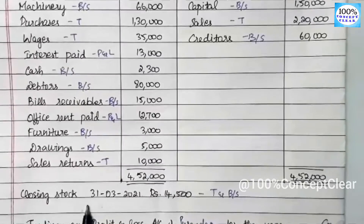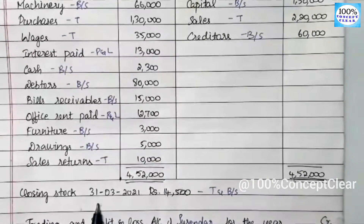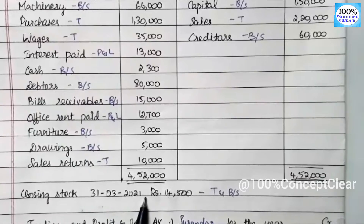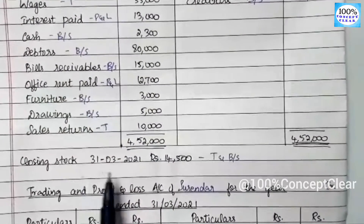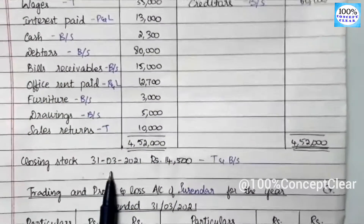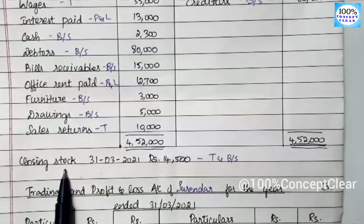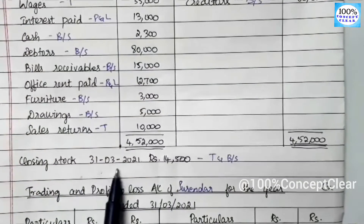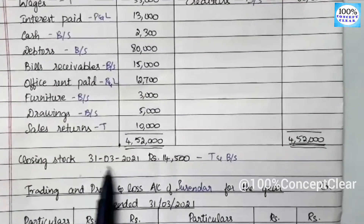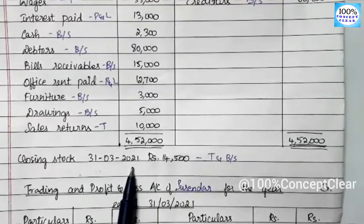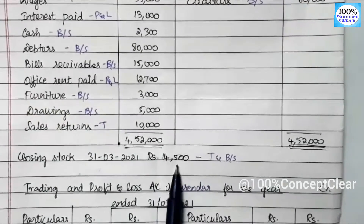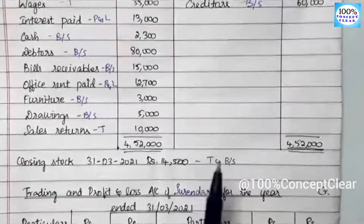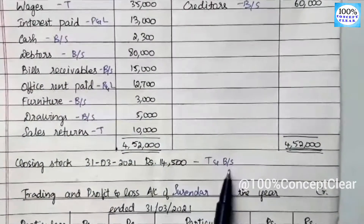There is an adjustment. Adjustments appear in other accounts — one account appears in the trial balance, but the adjustment appears in two accounts. We have an adjustment for closing stock; the ending date is 31.03.2021. So closing stock appears in two accounts: one is the trading account and one is the balance sheet.